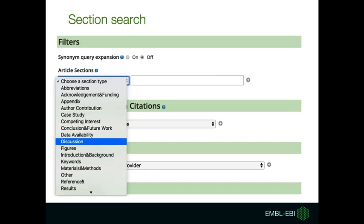You can also use the advanced search to search for keywords in specific parts of the article full text — for example, in the results, discussion, or methods sections. You can find this option on the advanced search page in the filters section. You can select the section type that you are interested in and enter your keywords.